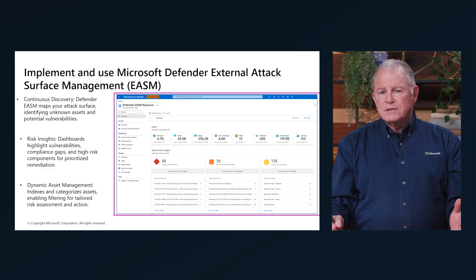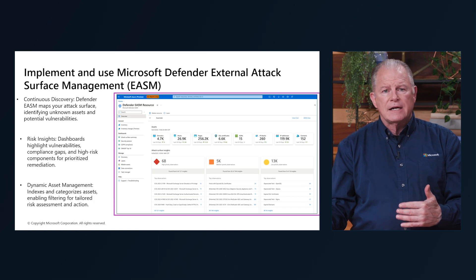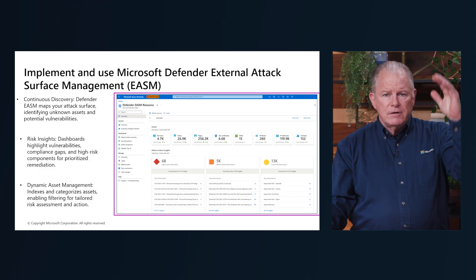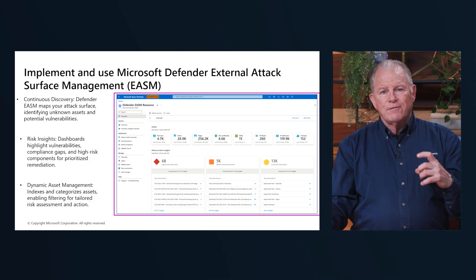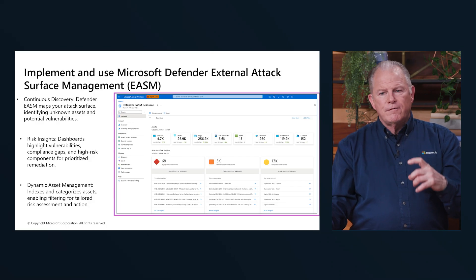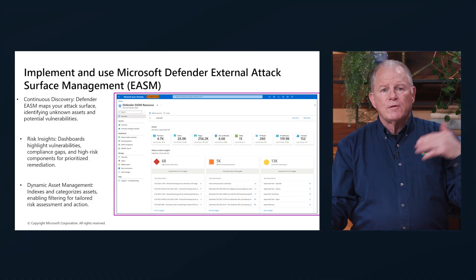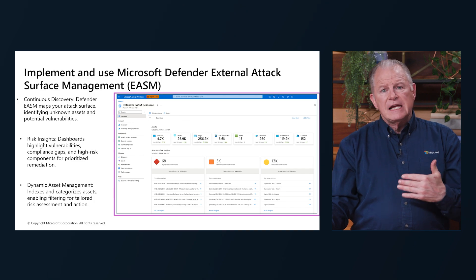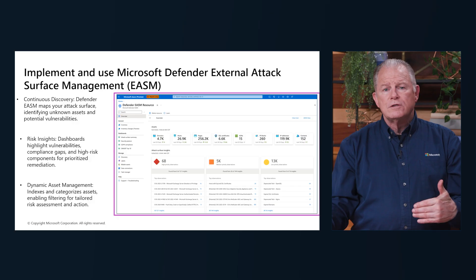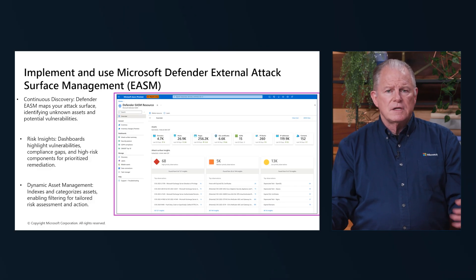Defender for Cloud has a number of different features available, and one you can enable is the Microsoft Defender External Attack Surface Management. There are about 13 or 14 Defender features listed in the course material that you can enable for resources like Azure Storage and Defender for App Services. This feature examines external attack surfaces, importing updated information as new attack surfaces are identified, showing what the attack surface looks like in your configuration, and what you might do to reduce it — such as turning off unused services to lessen the surface exposed to potential attacks.